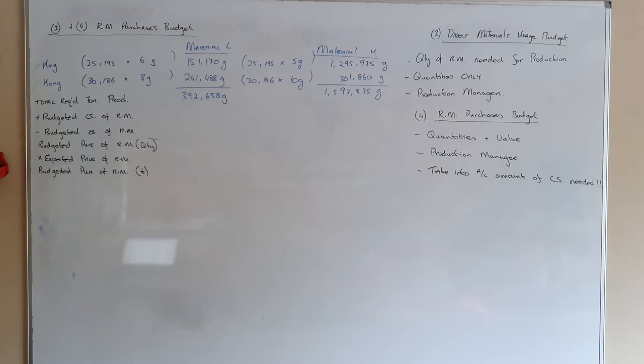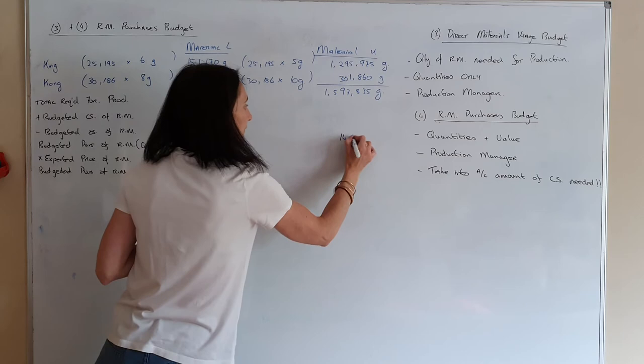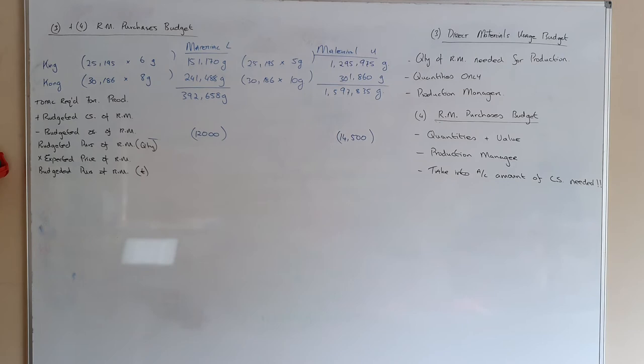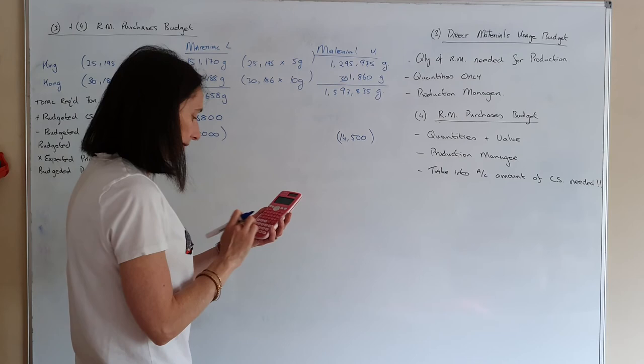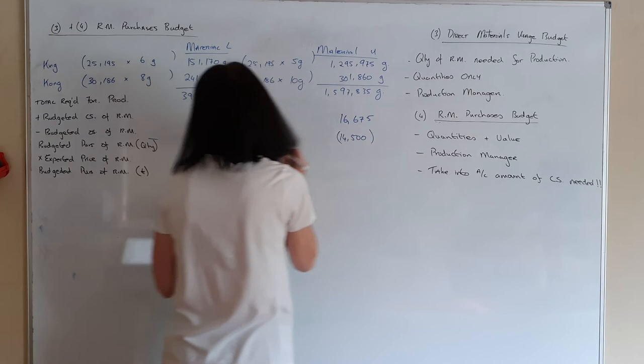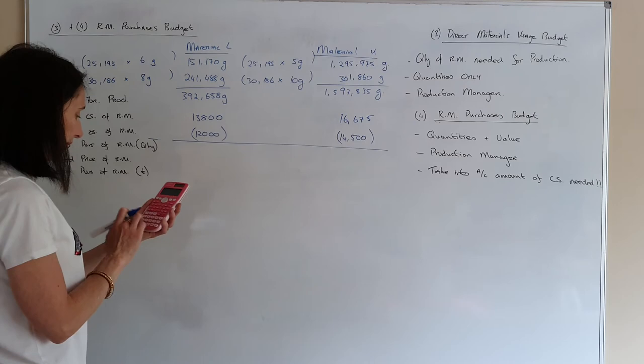For the honours, opening stocks are given: 12,000 grams for material L and 14,500 grams for material U. The question states all stocks are to be increased by 15%, so the closing stock for material L becomes 13,800 and for material U becomes 16,675.